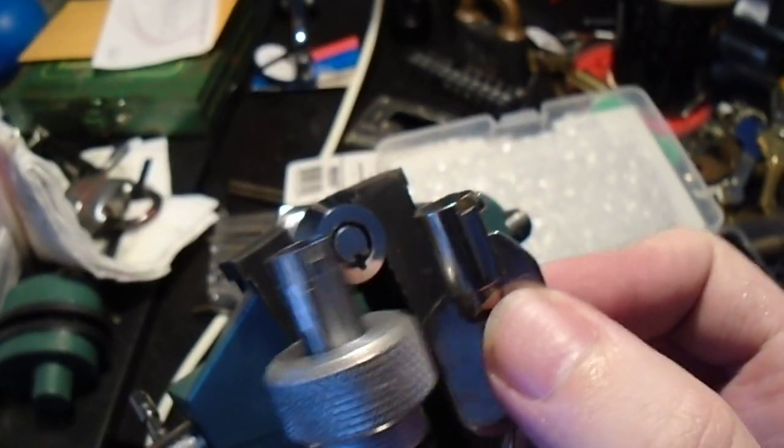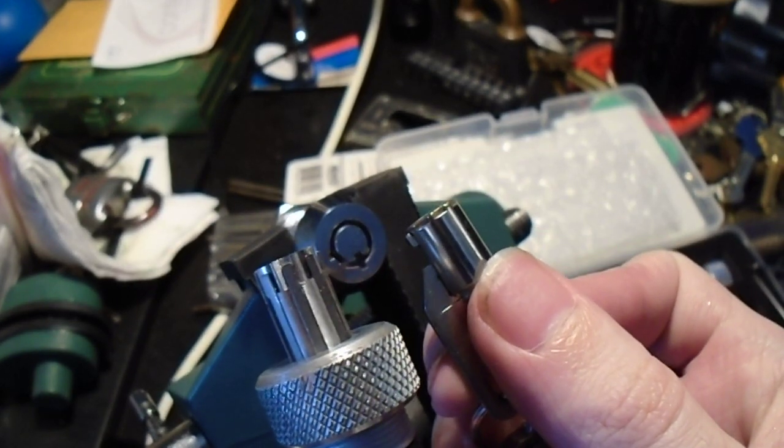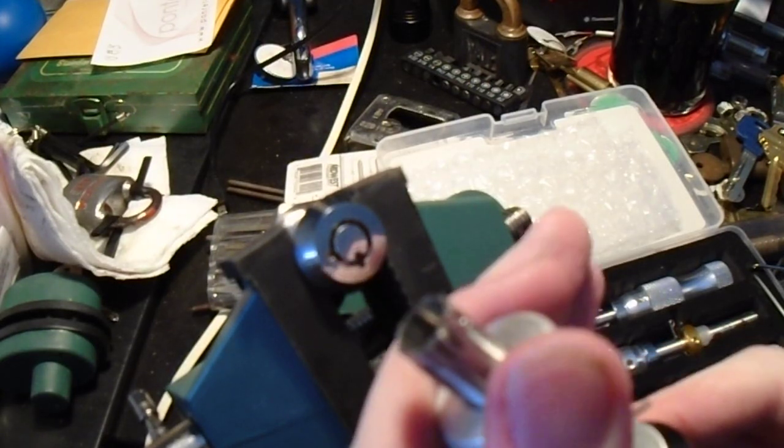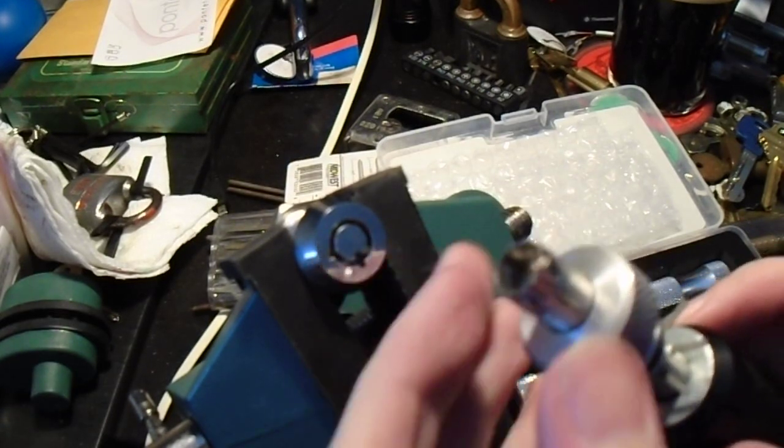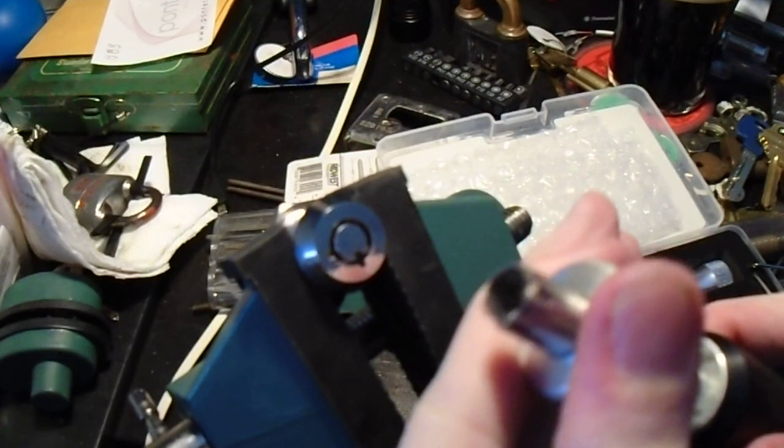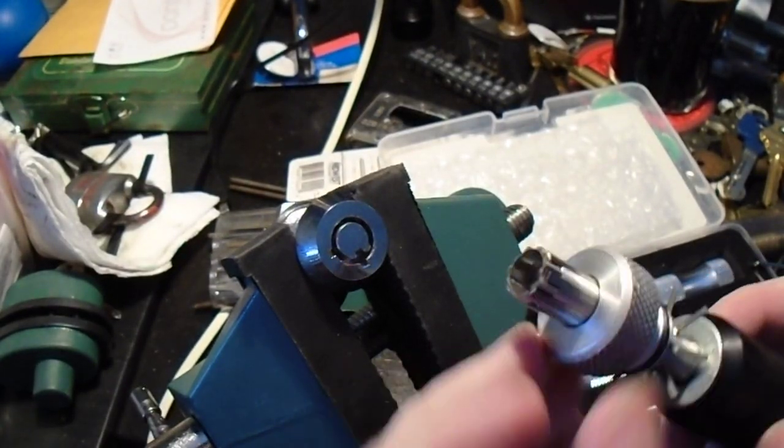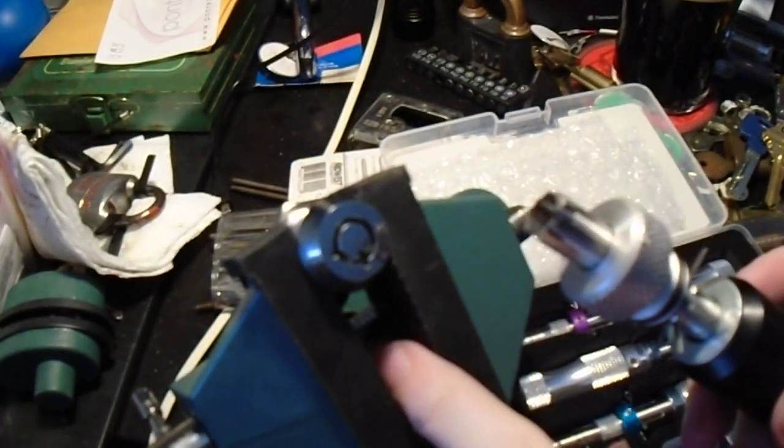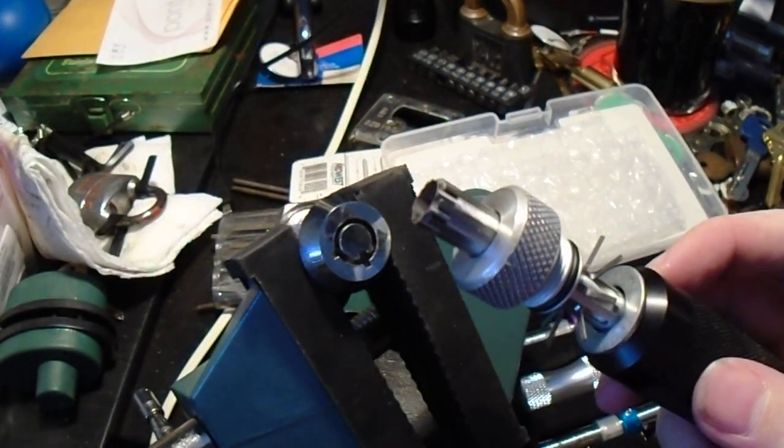And if we flip them around, you can see all the same depths. So, these picks are basically a self-impressioning tool. Because once you have it, once you have the lock picked and all of these feelers are down at the right height, they'll match exactly with the actual key that goes to that lock. So, if you're a locksmith and someone has lost the key to their tubular lock, you can get a decoder and read those depths and cut a new key for them.